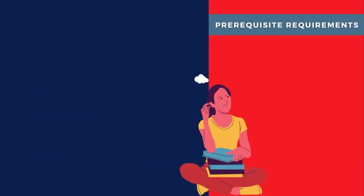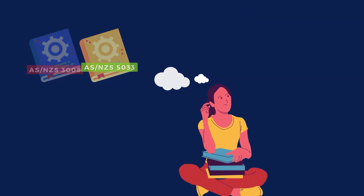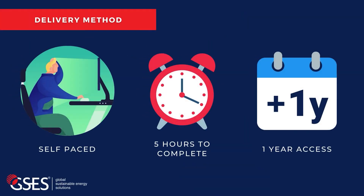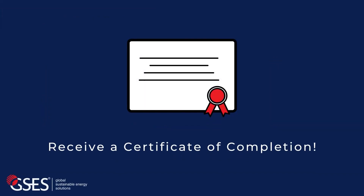To get ready for this course, you need to have access to AS/NZS 3008, and we recommend you have a working knowledge of how to design a PV system according to AS/NZS 5033. This course is estimated to take five hours to complete. It is a self-paced course with an access duration of one year. The delivery method is online via written material, videos, and quizzes. Students that complete the course successfully will receive a certificate of completion.